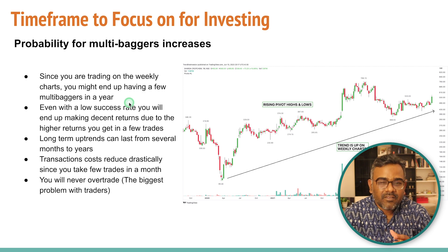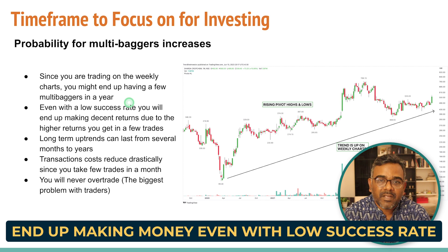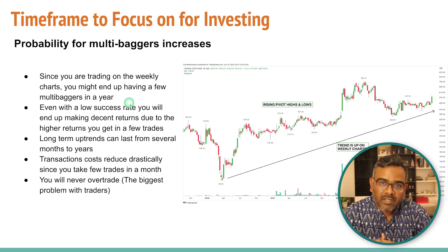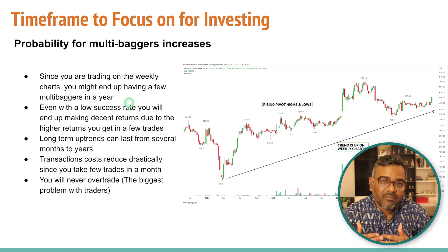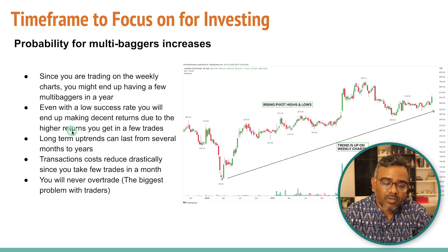This is very important to understand. Let's say you have 10 stocks and three of them are multi-baggers returning 100% each — even if the remaining seven hit a 20% stop loss, you'll still end up making money overall. So even with a 30-40% success rate, you'd be able to catch multi-baggers if you're focused on strong companies and weekly charts. If you implement this over two to three years, at least two out of ten stocks could turn into multi-baggers — that's the key takeaway from this video.